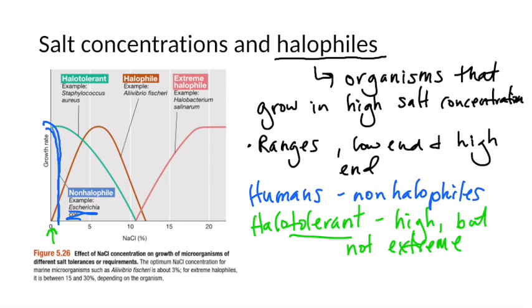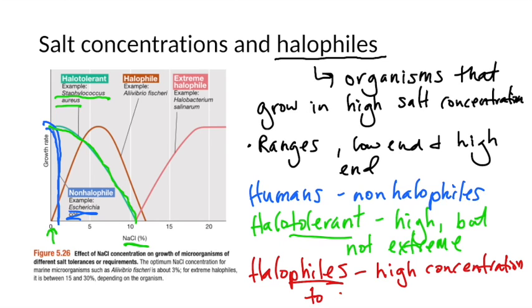Whereas our optimal salt concentration is somewhere less than 1, these halo-tolerant bacteria can survive in salt concentrations up to about 10% salt in their medium, in their solution. They grow best somewhere around 4% or 5%, and a prime example of this is the bacteria Staphylococcus aureus. And then we have what are called the halophiles and the extreme halophiles. As you can guess, with that root of phile there, these are the salt-loving bacteria, the salt-loving archaea. They need a very high concentration of salt to grow optimally. Aliivibrio fischeri is actually a seawater bacteria, so it makes sense that it would grow optimally. It would be evolved and adapted to an environment that has a relatively high level of salt.